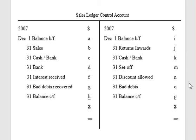In the sales ledger control account you will find two balances. Sales are normally recorded on the credit side of the sales account, but here we record them on the debit side. Cash or bank on the debit side represents refunds given to customers, and bank also covers dishonoured cheques. Interest is charged to customers who pay after the due date.